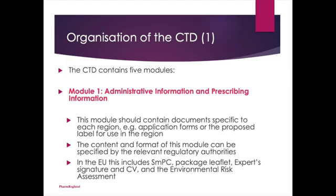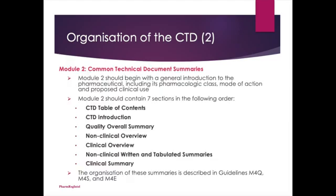Organization of the CTD: The CTD contains 5 modules. Module 1 is Administrative Information and Prescribing Information. This module should contain documents specific to each region, for example application forms or the proposed label for use in the region. The content and format of this module can be specified by the relevant regulatory authorities. In the EU, this includes the SmPC, Package Leaflet, Expert Signature and CV, and the Environmental Risk Assessment.